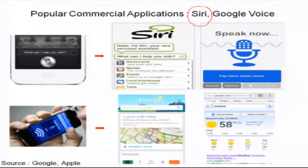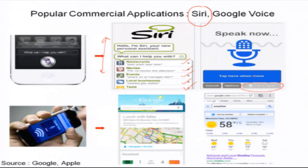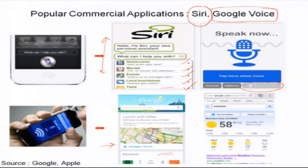Popular commercial applications of speech recognition include Siri on Apple iOS, which helps you search for restaurants, movies, events, local businesses, and even hire a taxi. If you have an iOS device, you should try accessing information using speech. Another popular application is Google Voice, which is available on any iOS device. You can connect to the power of Google using your voice — for example, locating an address or finding weather information by saying the city name.